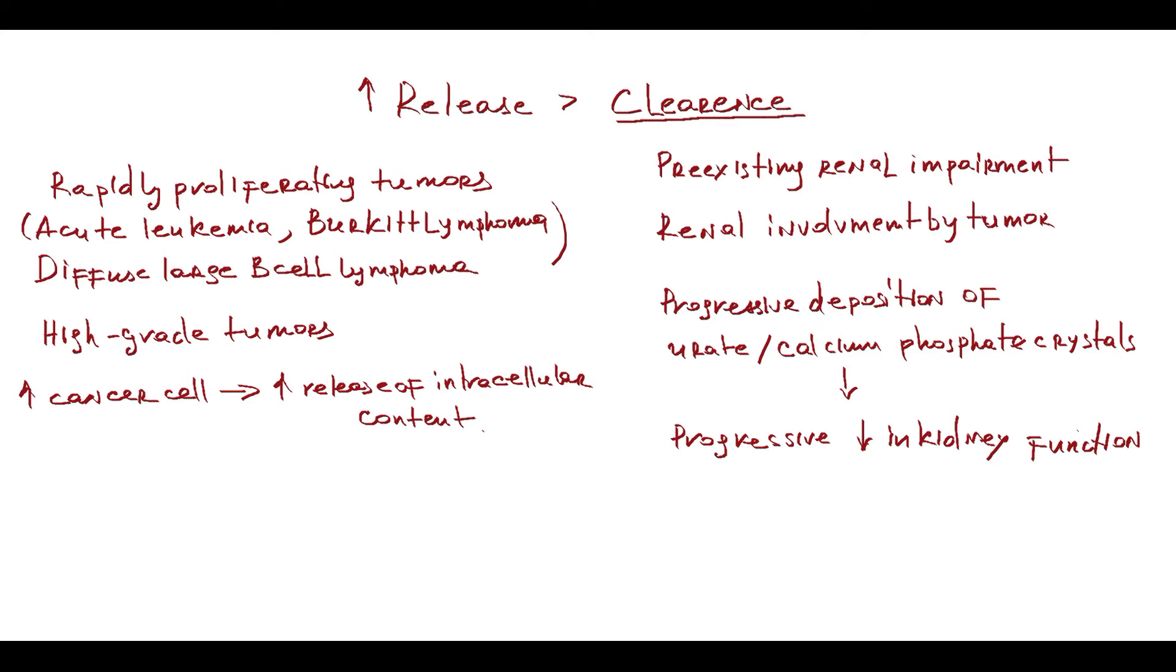To protect the kidney and prevent tumor lysis syndrome, there are two key points. First of all, hydration to improve renal perfusion, and also forced diuresis to prevent crystal deposition and precipitation. The same principle that is used, for example, in rhabdomyolysis with myoglobinuria.